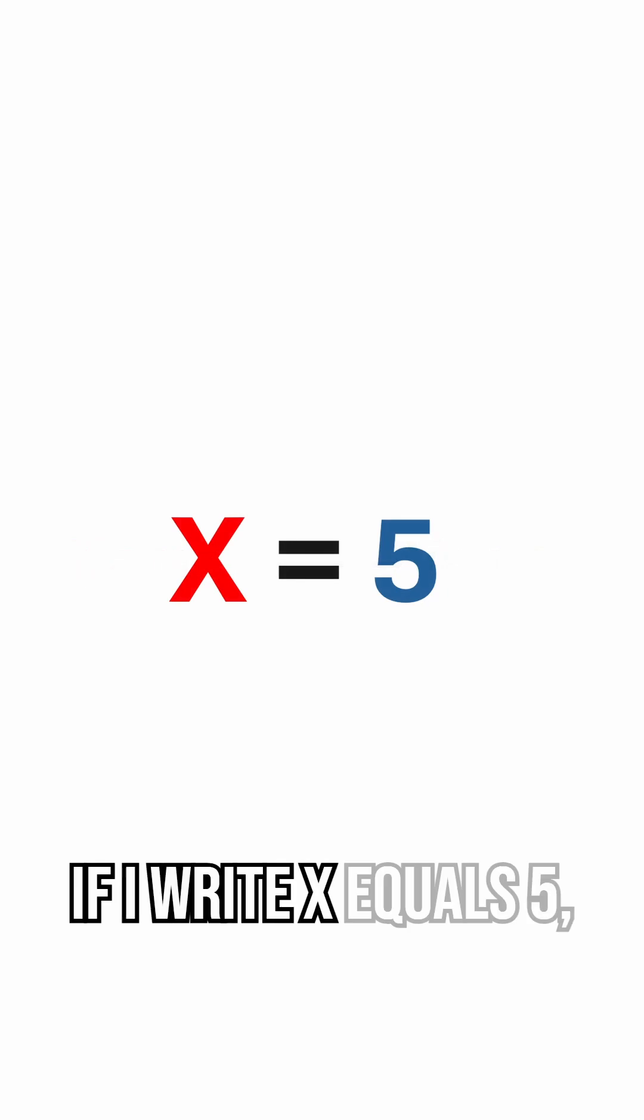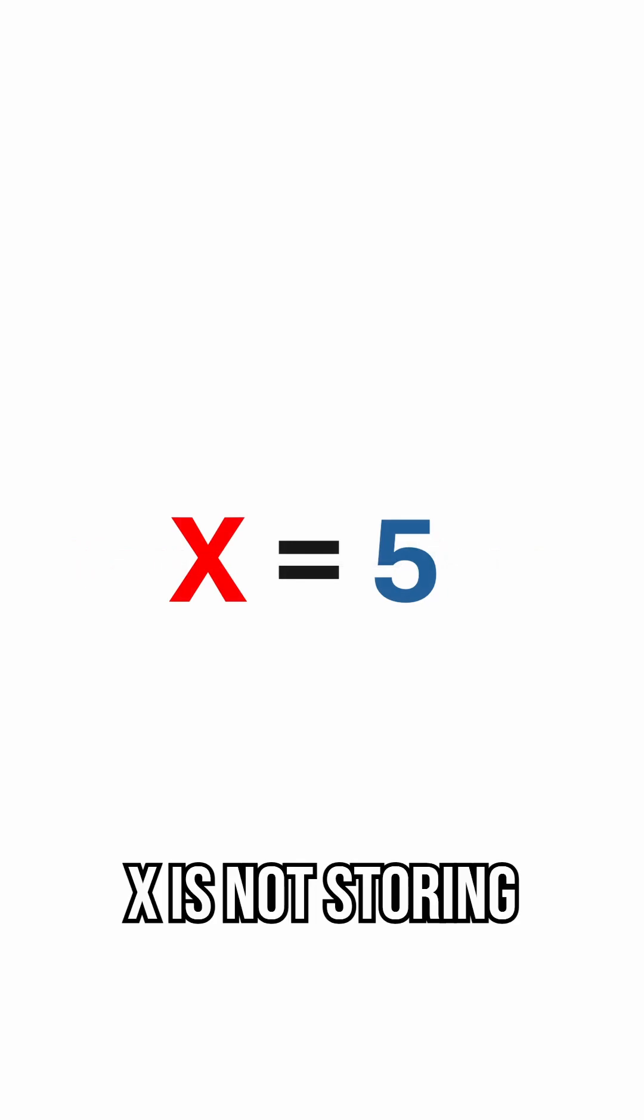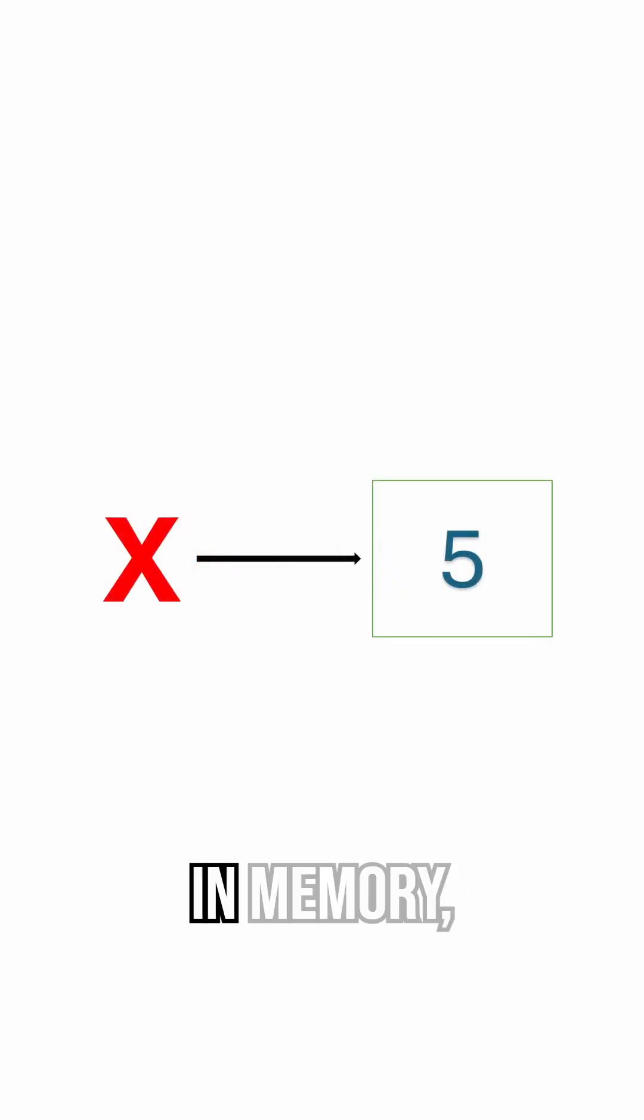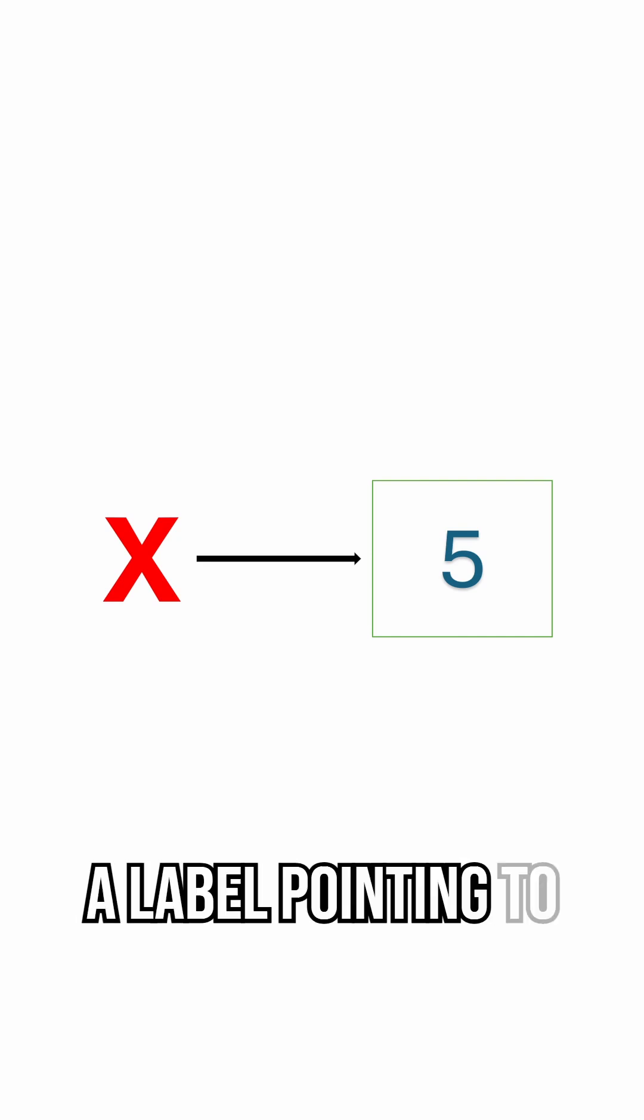For example, if I write x equals 5, x is not storing the number directly. Instead, Python creates an object with the value 5 in memory, and x becomes a label pointing to it.